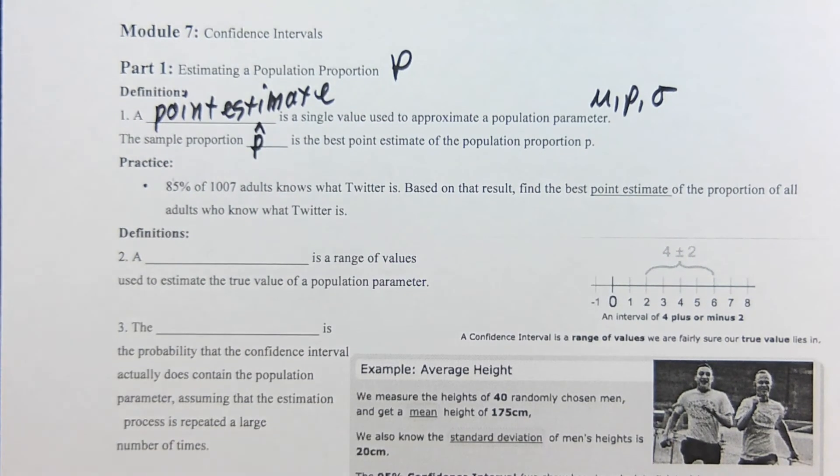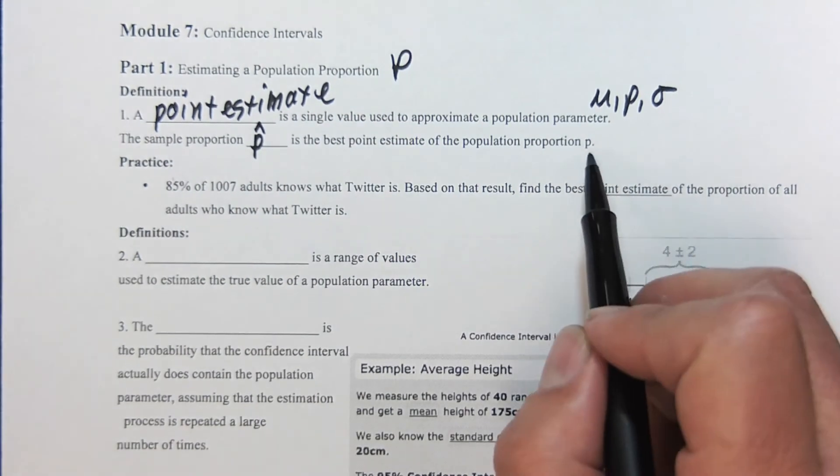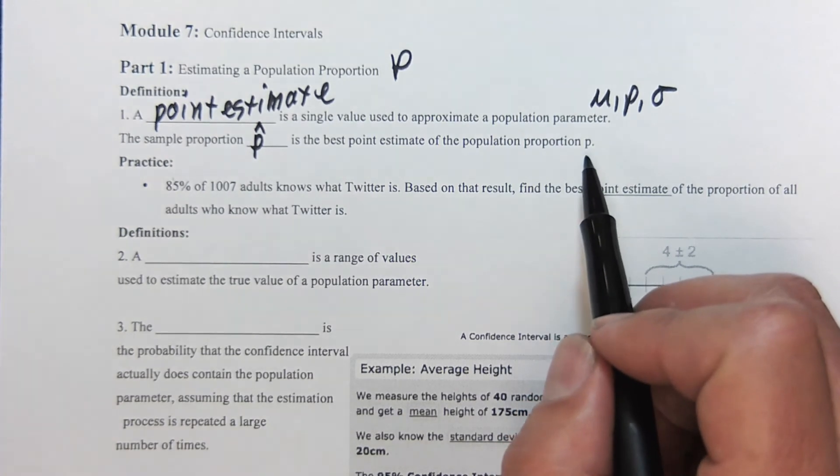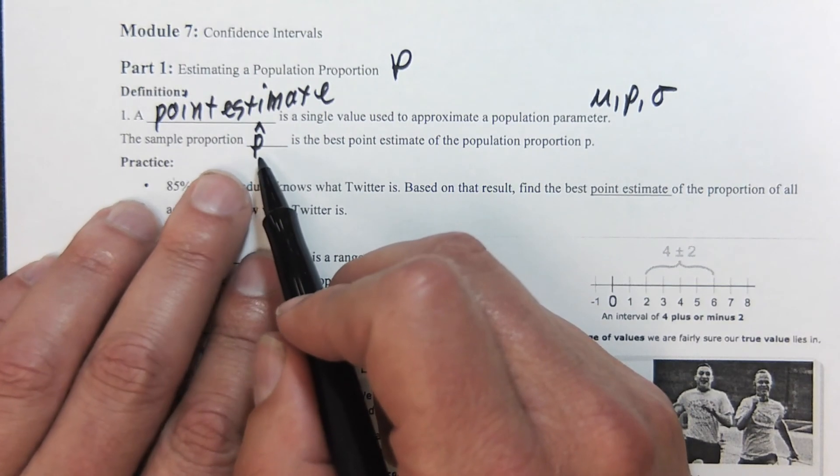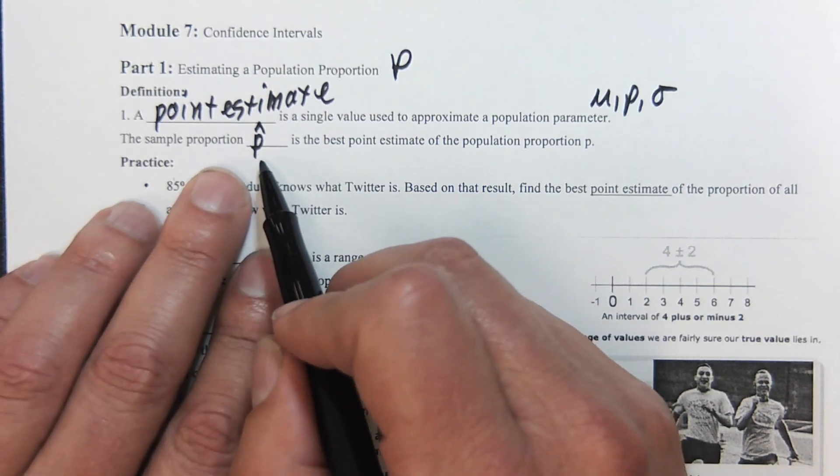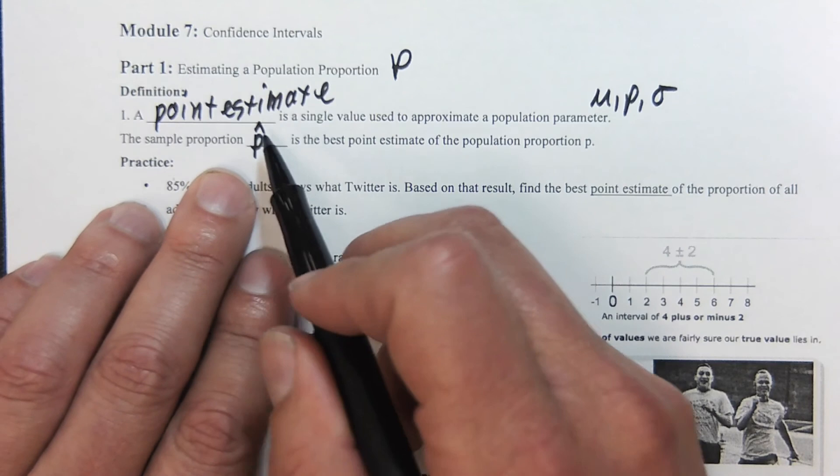Our sample proportion is going to be called p hat, and this is the best point estimate for the population proportion. So this is the true population proportion—seventy percent of people like this type of food—and then we sample some people and find the sample is about 68 percent.